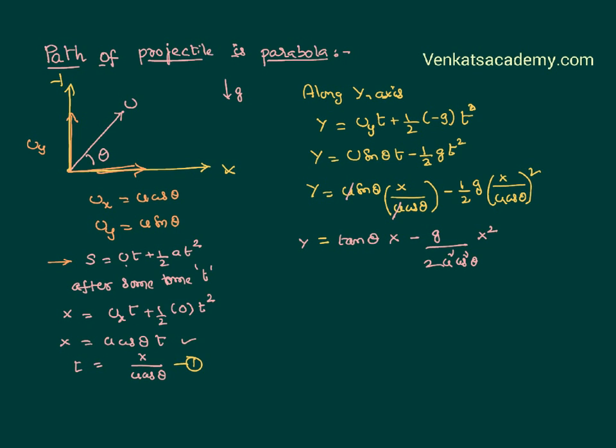It is very clear that tan theta is constant because the angle of projection theta is constant. Let us call that constant a. It is also clear that acceleration due to gravity is constant, 2 is a constant, velocity of projection is constant, and angular projection is constant. Therefore, cos squared theta is also a constant. Let me call that constant b.